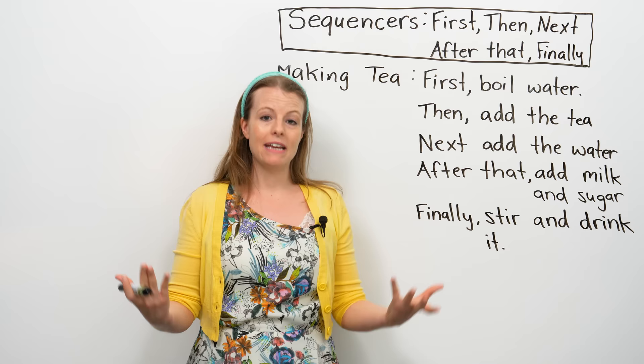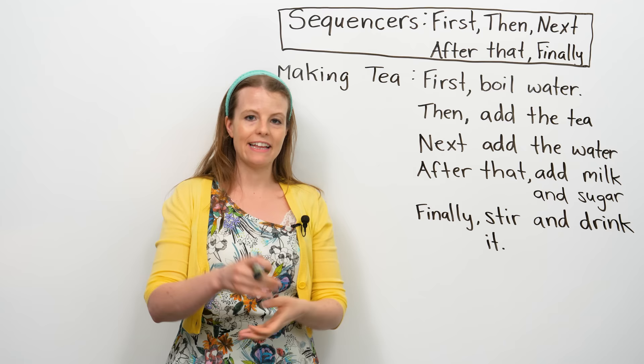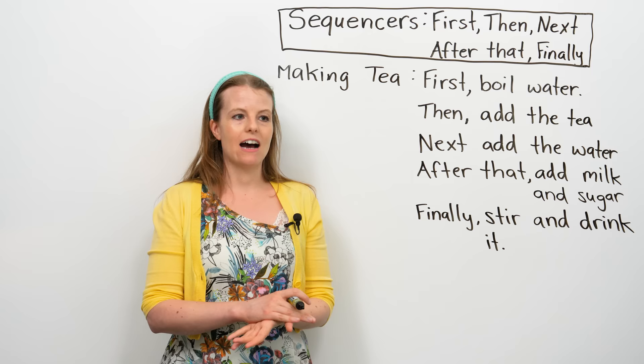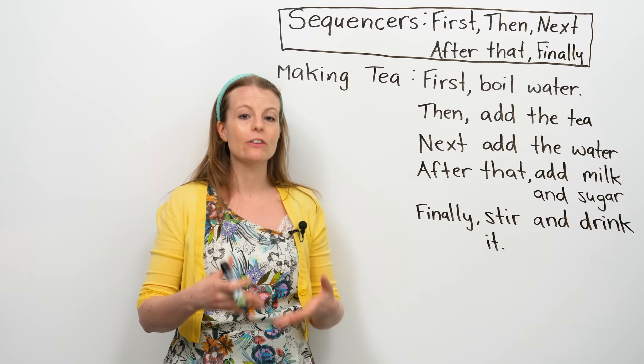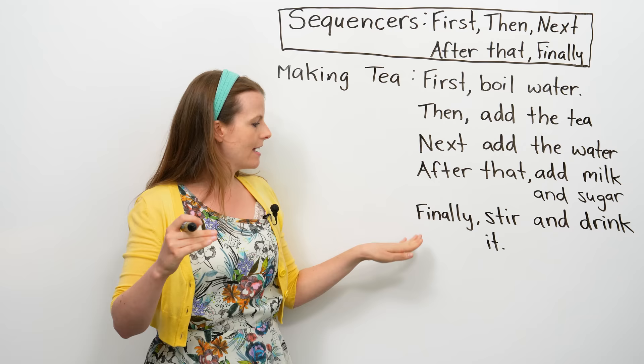If I wanted to, I could add more steps, and I can use some of these sequencers multiple times. For example, then you let the tea steep, or then you add honey. There are other steps you might add. The main thing is: use first for the first step, and finally for the last step.